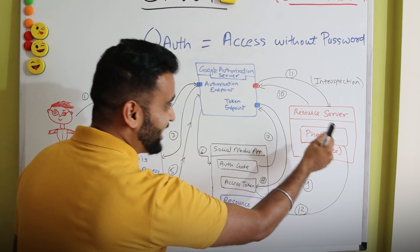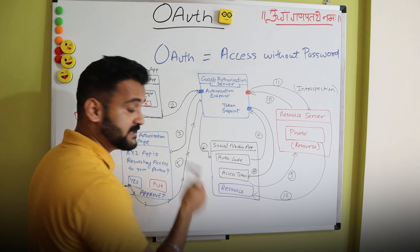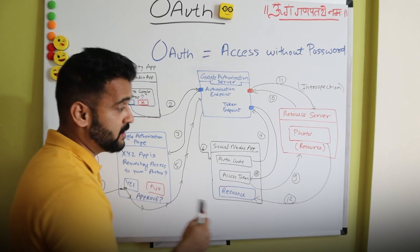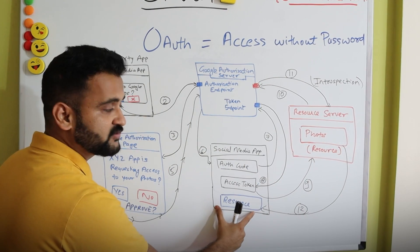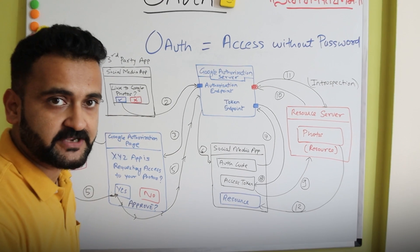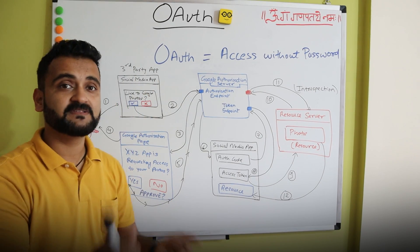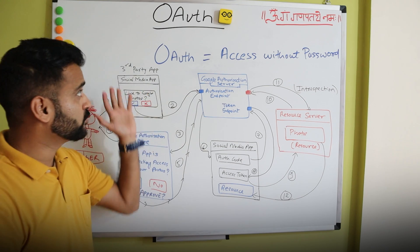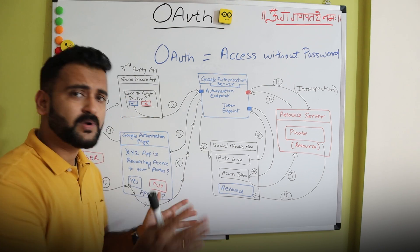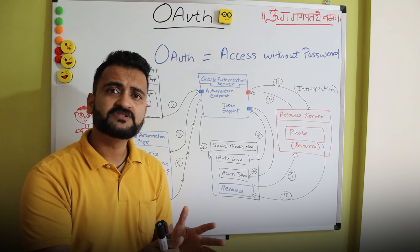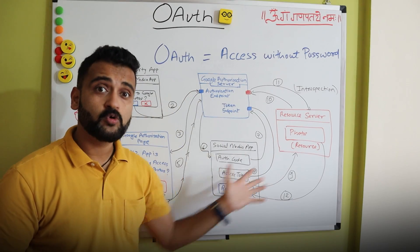At step ten, the resource server takes this access token to the authorization server. At step eleven, the authorization server confirms: 'I myself gave this access token, so this application can be trusted.' Finally, at step twelve, after confirming the identity and trust of this media app, the photos are sent as a resource to the social media application. This may look like a very lengthy workflow, but it happens in a split of seconds. The whole OAuth protocol is designed as an open standard so anyone can use the OAuth API to produce this whole workflow.